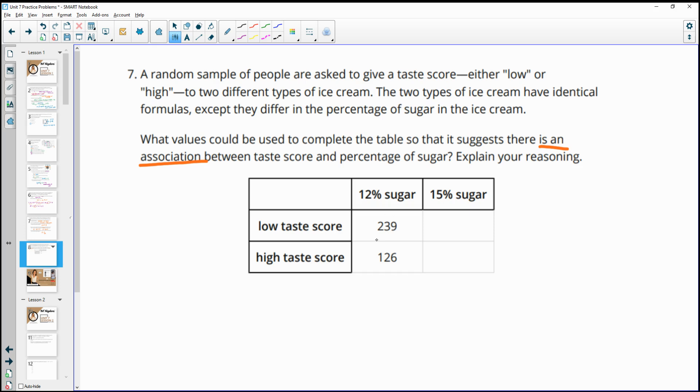And so if there is an association, then a lot less people would be giving this one a low rating. So you can just pick a number significantly lower. Like you could say 50 people said this one had a low taste score. And then you'd want to give a significantly higher amount to the number of people that gave it a high test score. So like in this one, we had more low than high. So now we just want more high than low. And you can, I mean, this is really arbitrary. You can pick kind of whatever you want. So I'm just going to put 300. So now we can see that there's like six times, like six times more people liking, giving the 15% sugar higher than here. So more people gave it low than high in the 12%. And then we flipped that around. So now more people are giving it a higher rating than low. And that's because there is an association between the amount of sugar and the taste test, or that's what we're putting into this table.